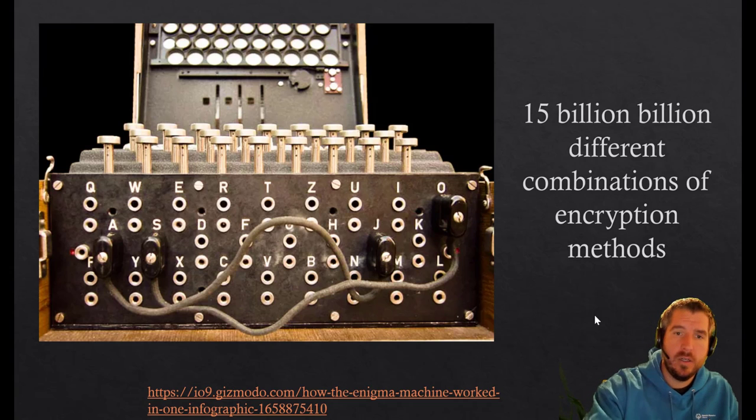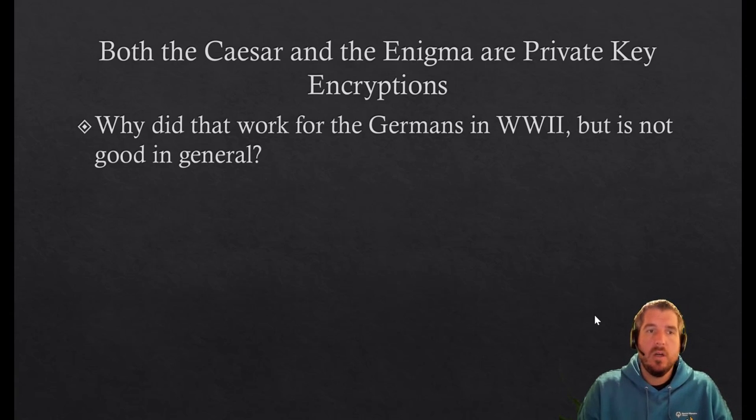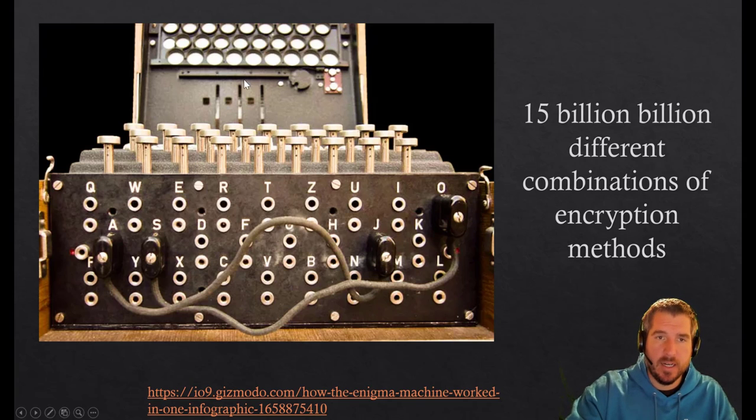The problem is that works fine for the Germans in World War II and it worked okay for the Romans, even though there's only 26 possibilities, but it's not good in general. This is a big problem because all the German officers would have a code book that would tell them where to set these dials and where to put these switches. Every day the code would change—they would change those locations, so every day the encryption would change.